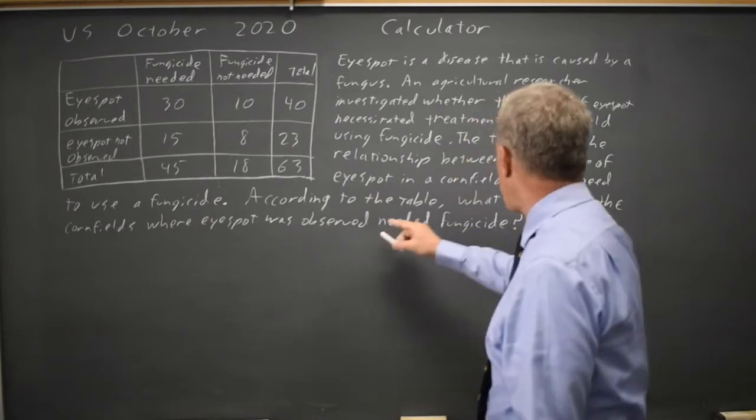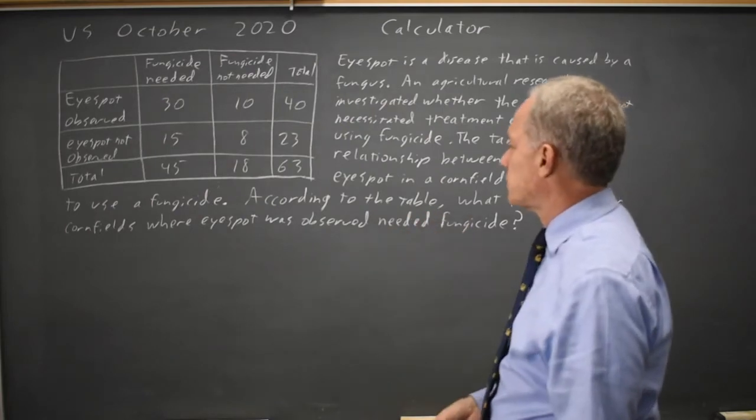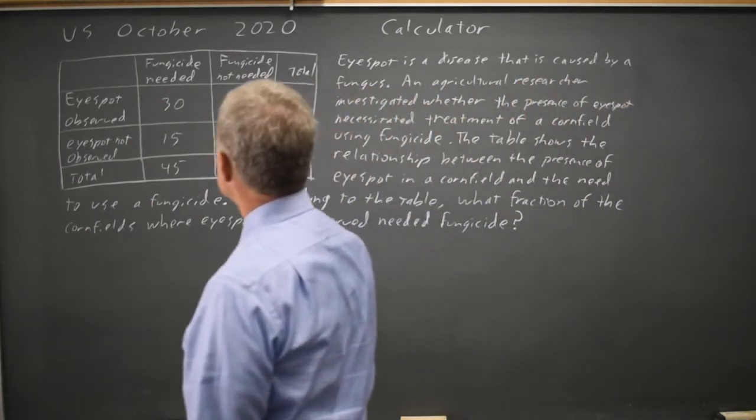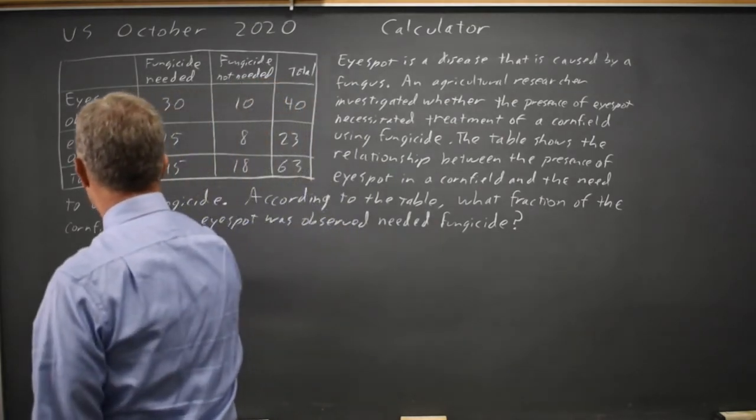In this case, they're asking about what fraction of cornfields where I-spot was observed. So that was this top row here. So our fraction,